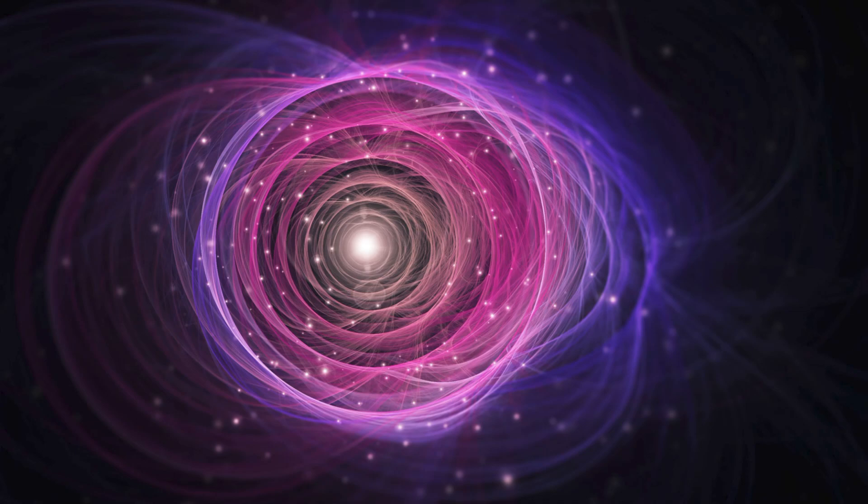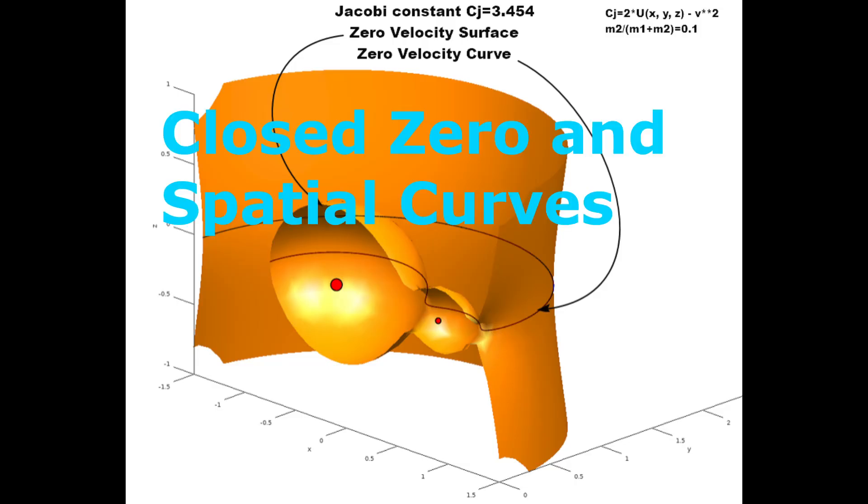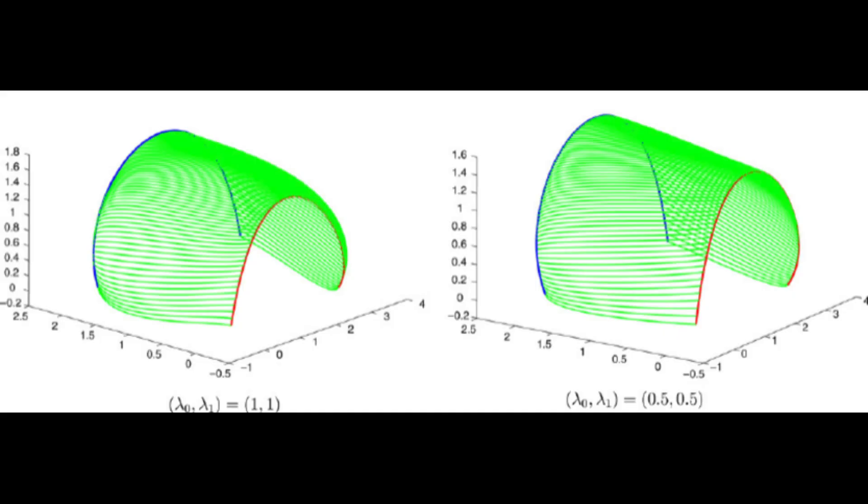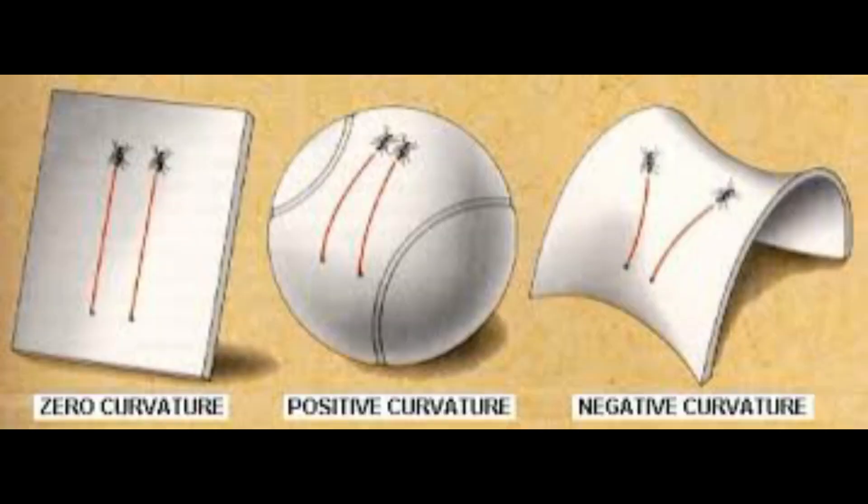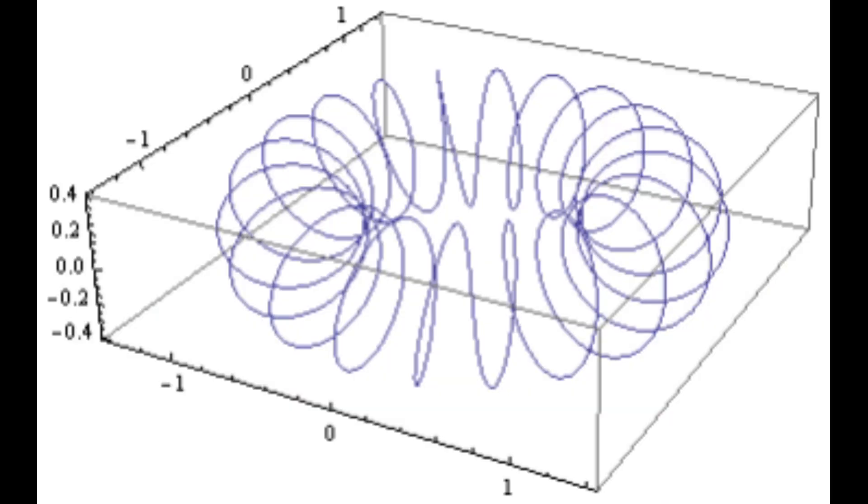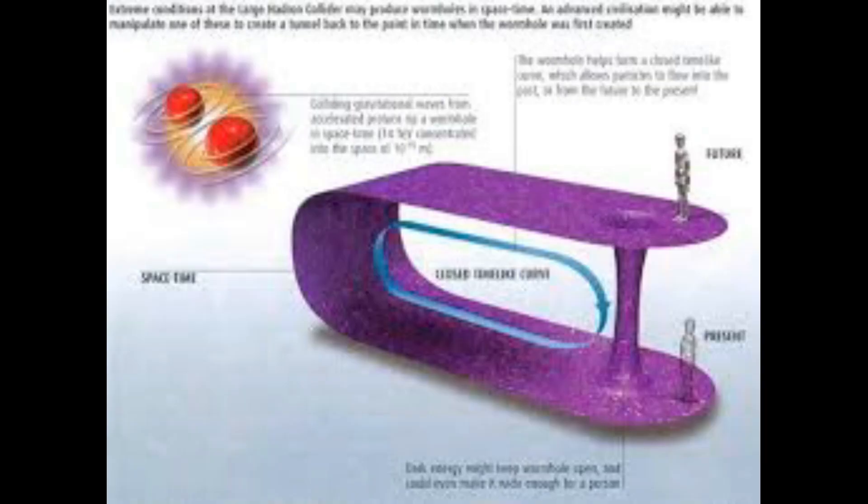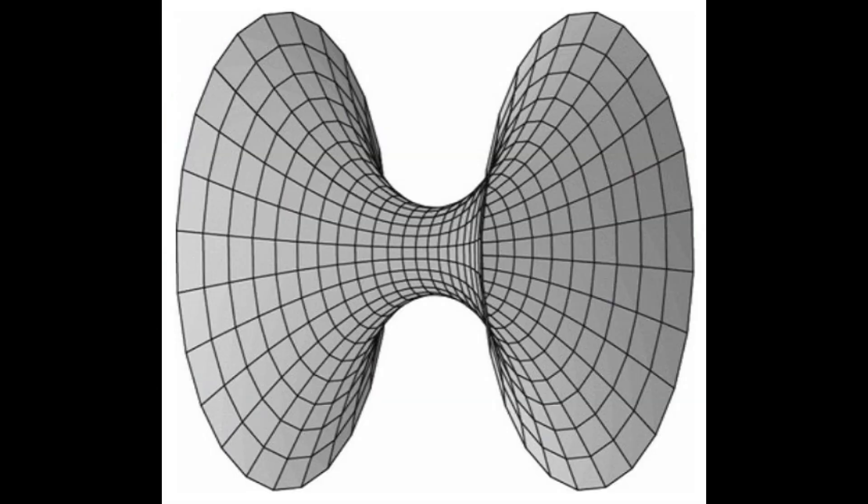We will also consider closed zero curves, or geodesics, which are paths followed by light. They are the shortest distances between points in space-time. In Gödel's universe, these zero curves can also form loops. Unlike CTLs, which concern massive objects moving along temporal paths, zero curves concern the trajectories of light or massless particles. This illustrates the closed zero curve, emphasizing the unique space-time geometry in Gödel's solution.